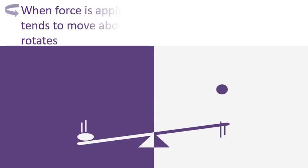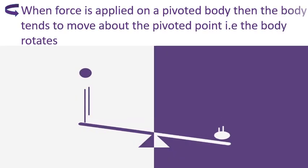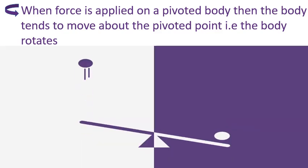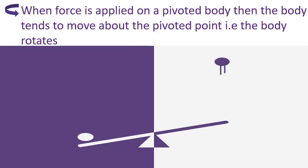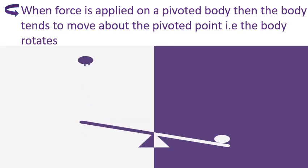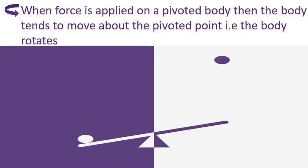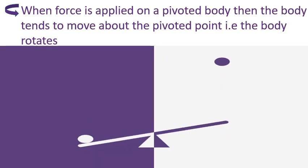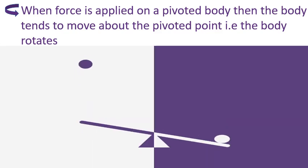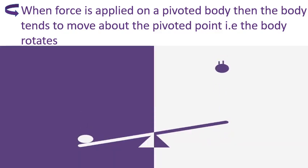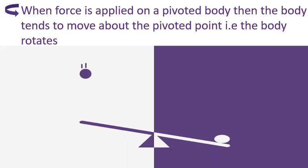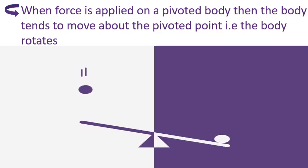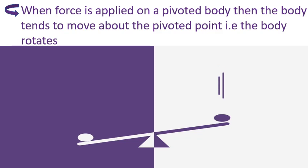So we can conclude that under the action of an external force on a body which is fixed at a point, the body starts rotating about the pivoted point in the direction of applied force. The force applied here did not move the body forward. Instead, it made the body rotate about the pivoted point. This effect of force which made the body rotate about the pivoted point is known as turning effect of force, or moment of force, or torque.